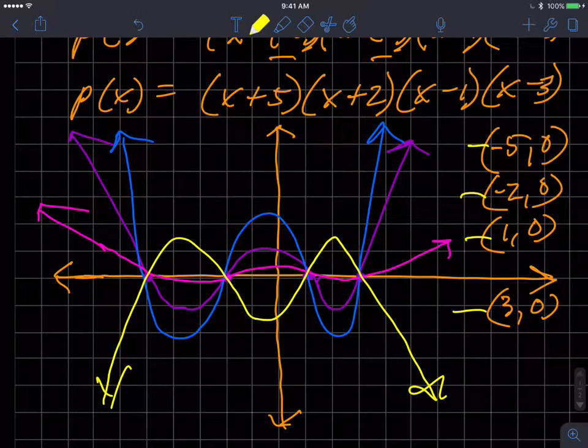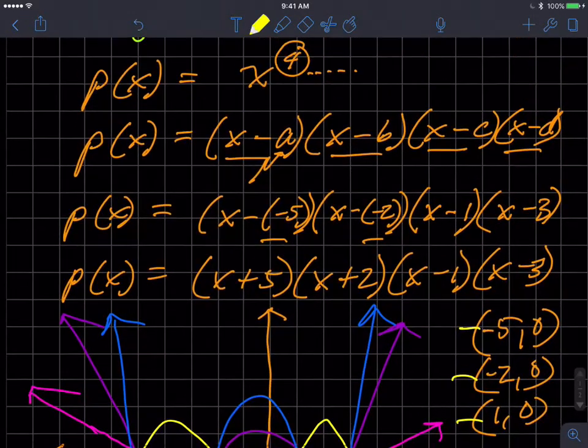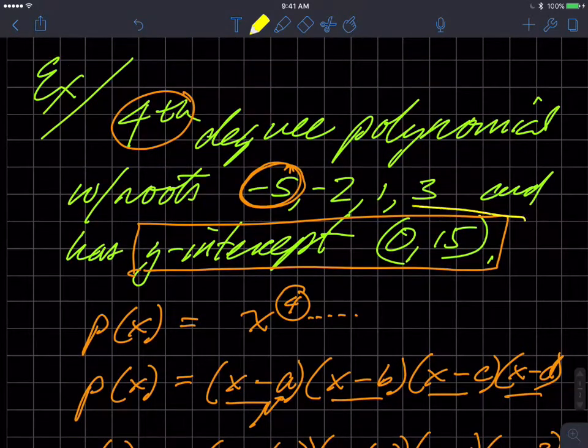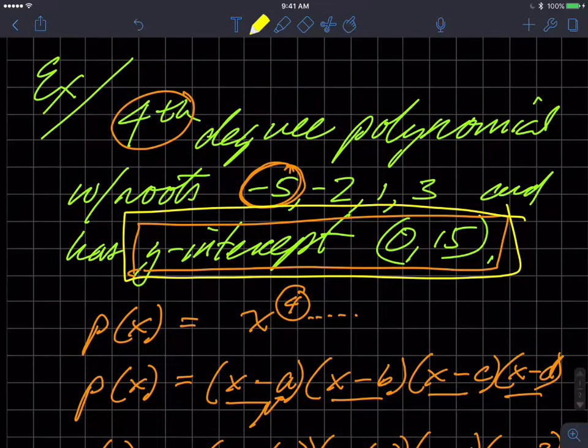So in fact, how many functions, graphs of functions would go through these four points? You should be thinking infinitely many. I can squish this and move them around. So in fact, there are infinitely many.